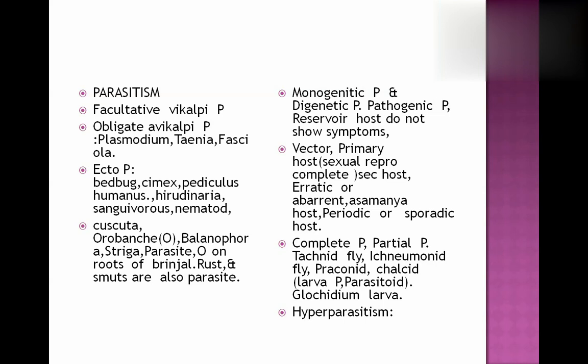Ectoparasites: bed bug (Cimex), Pediculus humanus, Hirudinaria, nematodes — these are all examples of ectoparasites. Cuscuta (amarbel) is also an example of an ectoparasite. Orobanche and Striga are parasites on the roots of brinjal — they get nutrition from the roots. Rust and smut are also in the category of parasites.